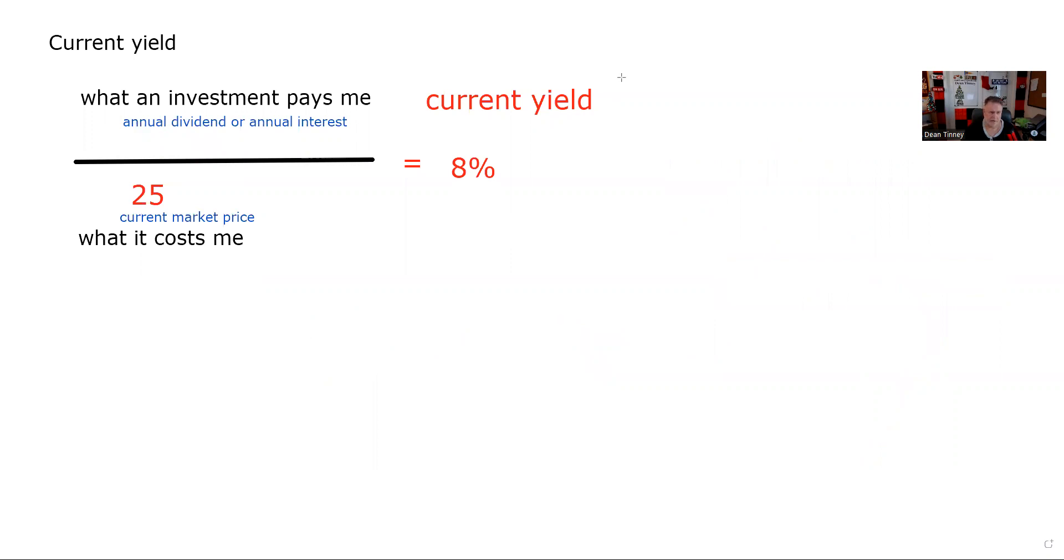And just by way of review, we said you definitely got to know how to calculate current yield. Current yield is what an investment pays you divided by what it costs you. In a stock, that's the annual dividend. In a bond, that's the annual interest, by the current market price. The student test taker was told the current market price was 25, the current yield at the time was 8%, and what was missing is that dividend. So we have to solve for that dividend first.